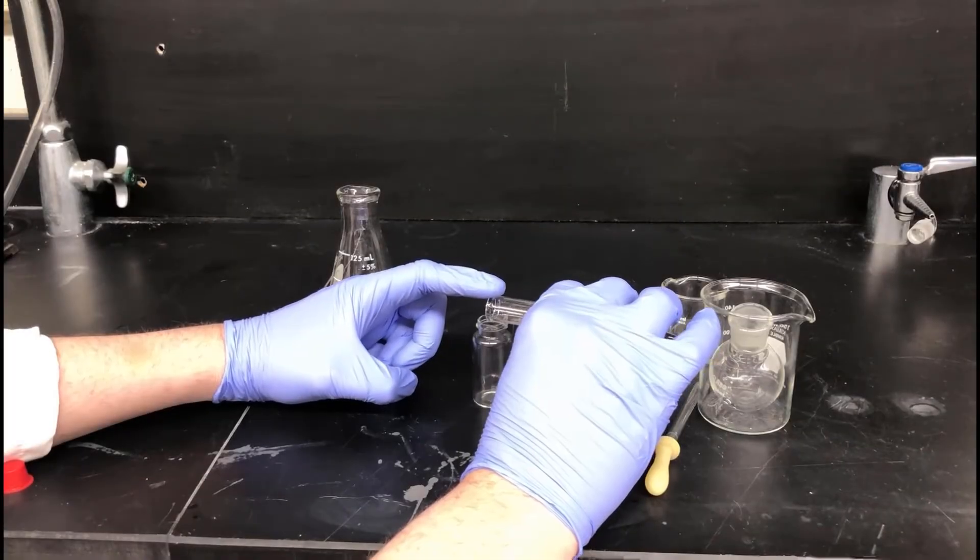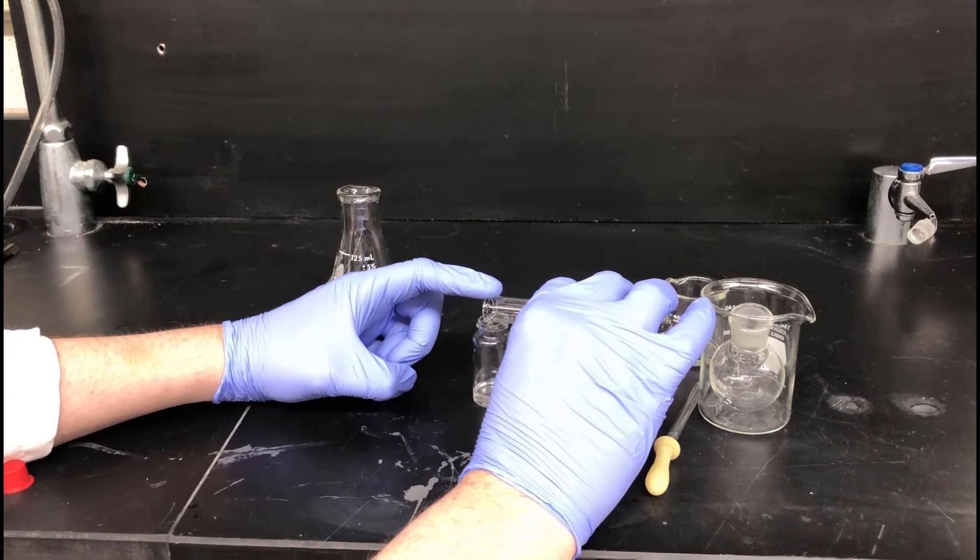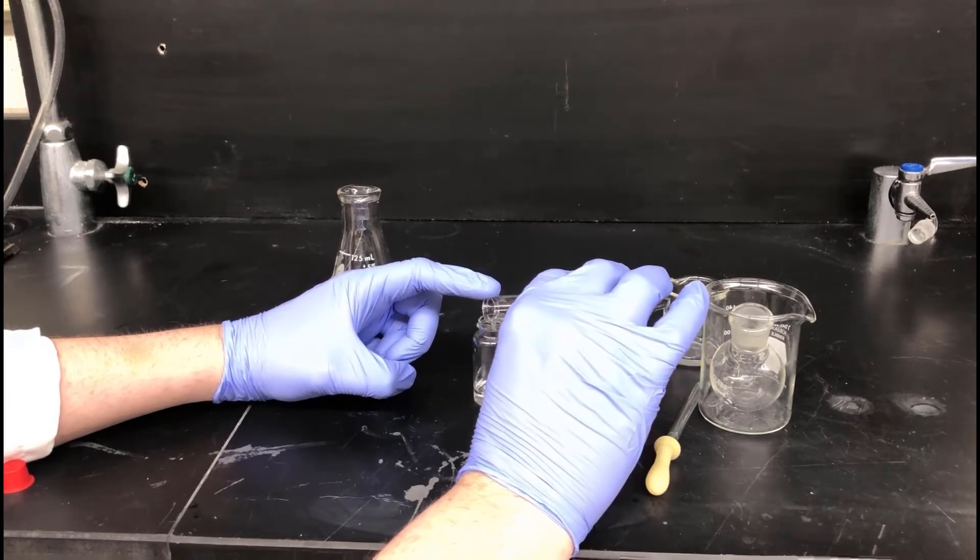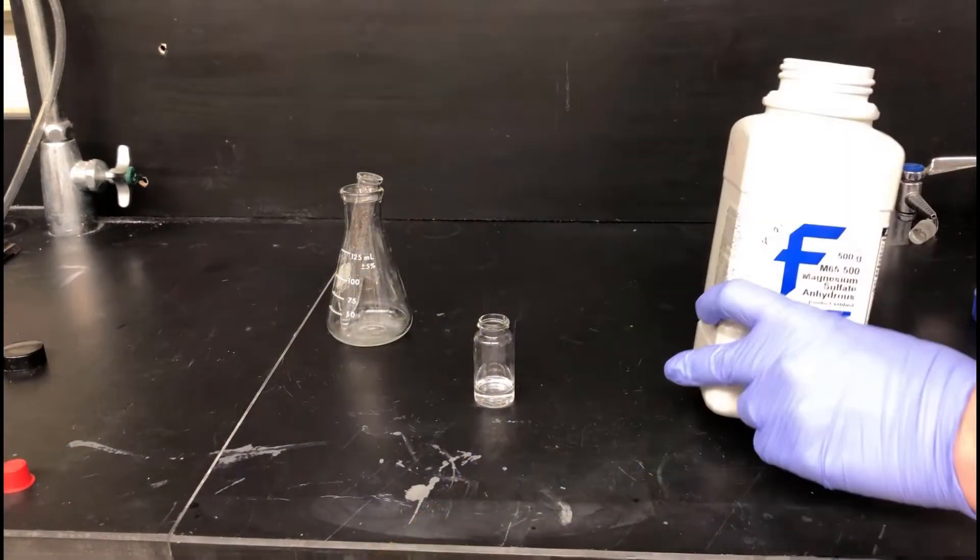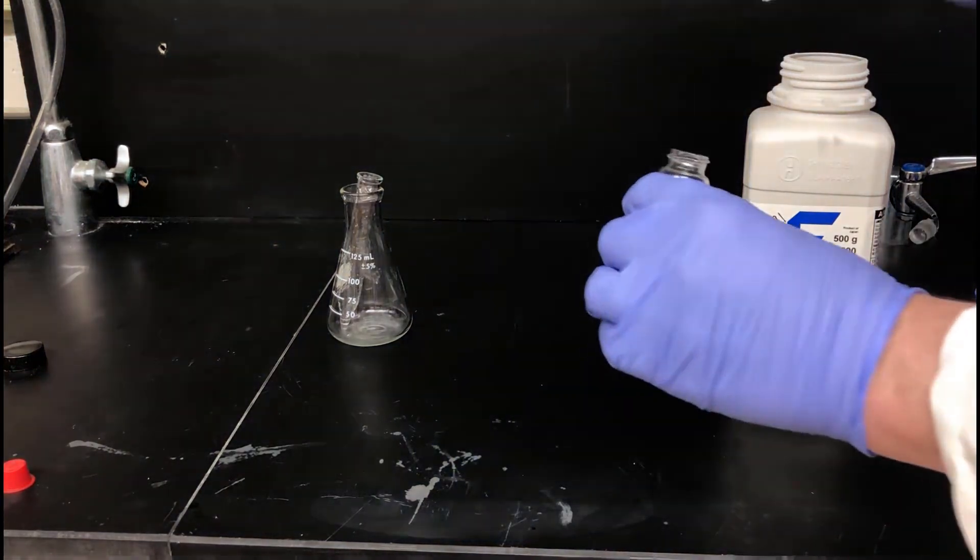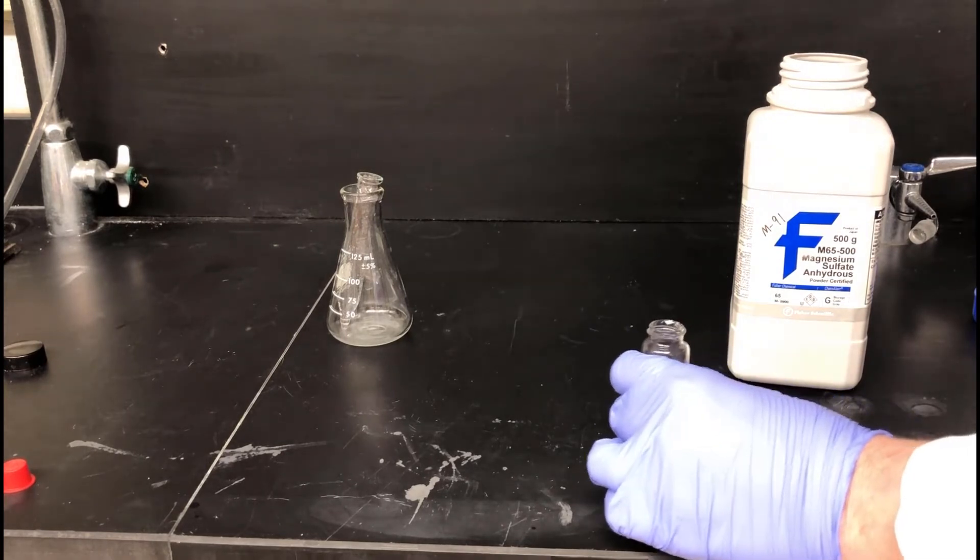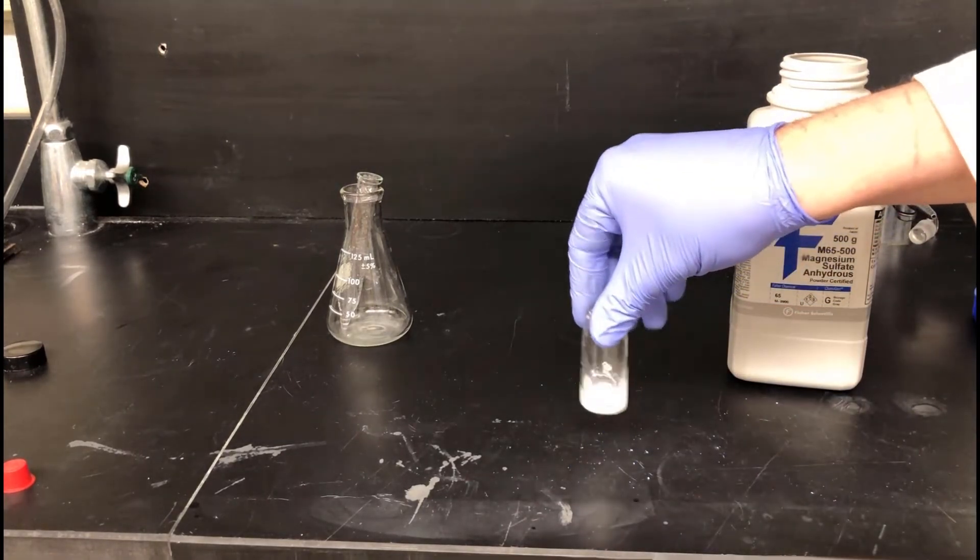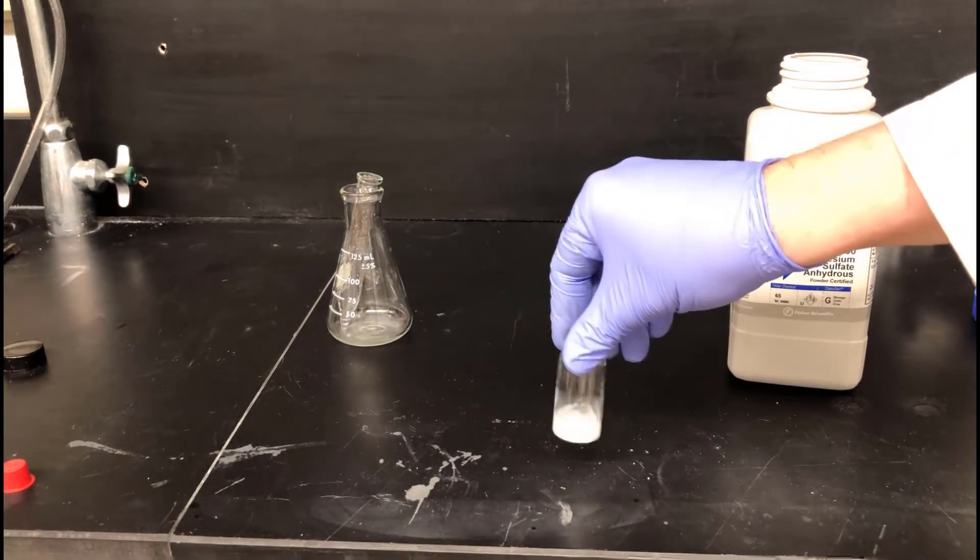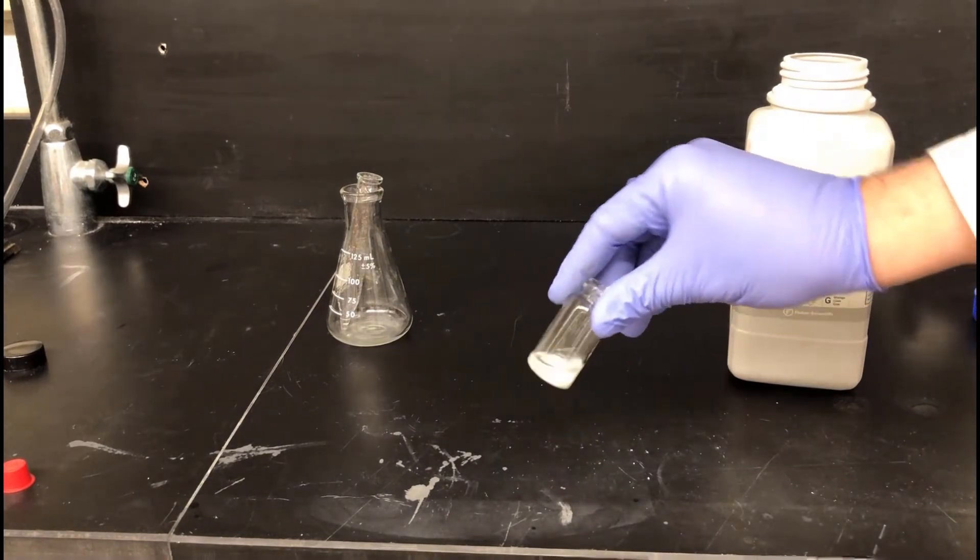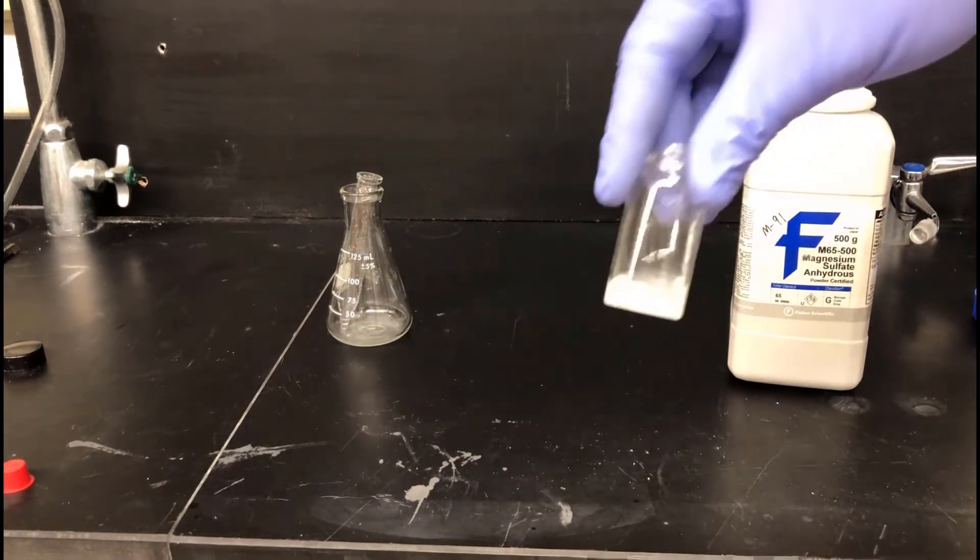The remaining top layer is the product mixture. Pour that into a small vial and add some magnesium sulfate drying agent. The purpose of the magnesium sulfate is to absorb any water that might be dissolved in the organic layer. Add enough magnesium sulfate to make a thin layer on the bottom of the vessel. You don't want to add too much because it'll become cakey and then you won't have anything to filter. You'll know you've added enough if it remains free-flowing.